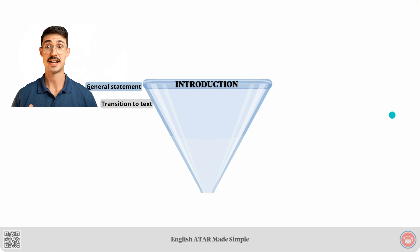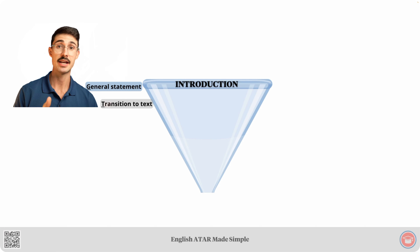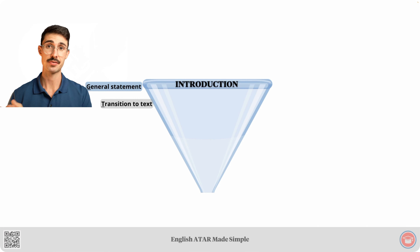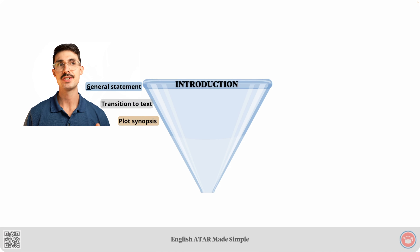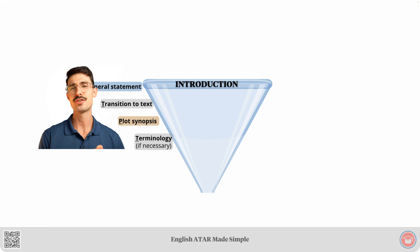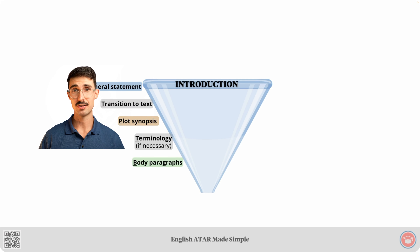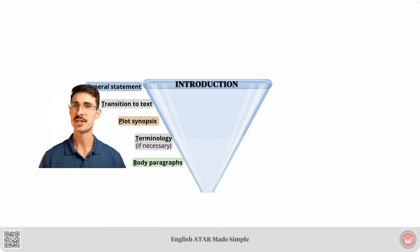Our next element is the transition to text element. This element is a sentence that transitions from the general statement to the plot synopsis by stating the year the text was published or released and the names of the text creators. Then element number three is the plot synopsis — one to two sentences, ideally one, that summarize the plot of the text you will be analyzing. Our next element is the terminology element, where you should define any elements of the question that are open to interpretation and won't otherwise be addressed in a different aspect of the introduction. After that, we have the body paragraphs element, where you should write one to two sentences that outline what the focus of each body paragraph will be.